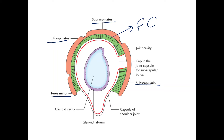Regarding nerve supply: supraspinatus and infraspinatus are supplied by the suprascapular nerve with root value C5–C6. Teres minor is supplied by the axillary nerve. Teres major is supplied by the lower subscapular nerve, and subscapularis is supplied by the subscapular nerve. This concludes the muscles of the scapular region. Thank you so much. Bye.